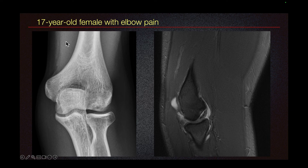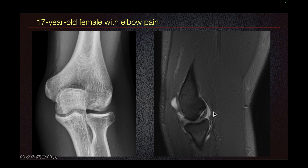Here we have another 17-year-old female with elbow pain and here we see the osteochondral lesion of the capitolum. This is a sagittal MRI image. We see the osteochondral lesion and we see fluid signal between the osteochondral lesion and the underlying bone, which suggests that this could be an unstable osteochondral fragment, meaning that this could move around.